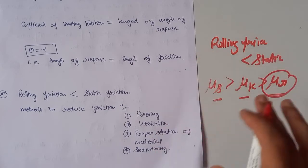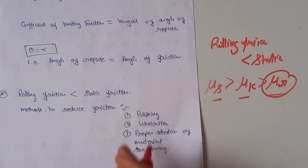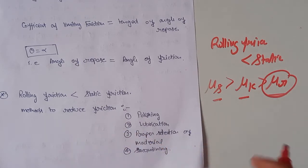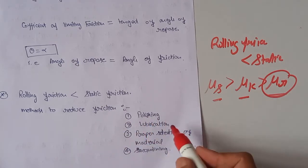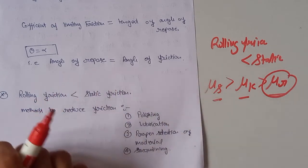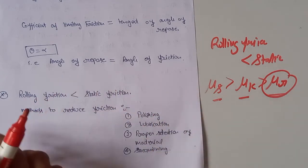Methods to reduce friction: number one — polishing; number two — lubrication; number three — proper selection of material; number four — streamlining.